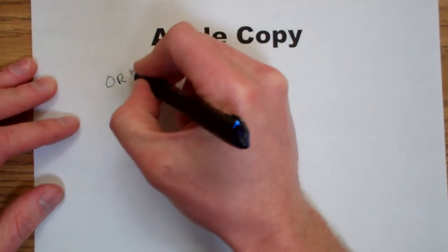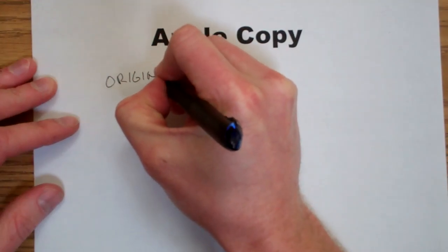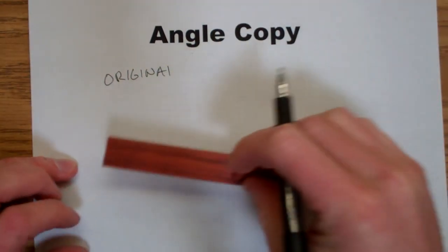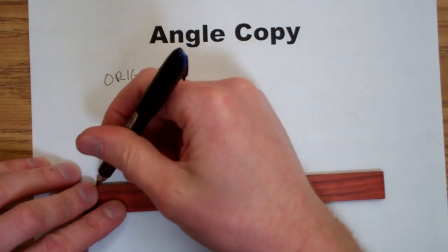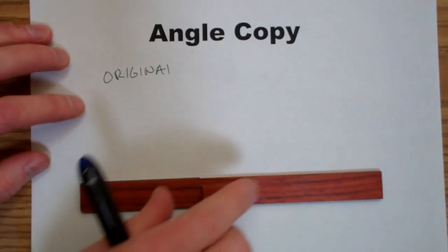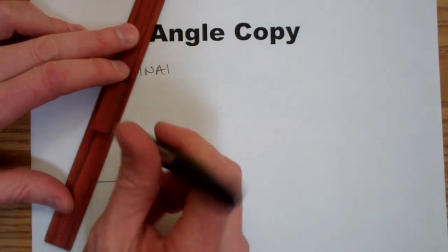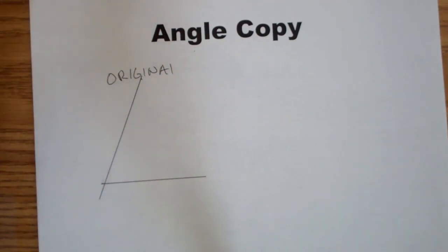To start, we're going to need to draw an original angle. I'm going to draw an acute angle. We're drawing two lines that intersect. The length of the lines doesn't matter.